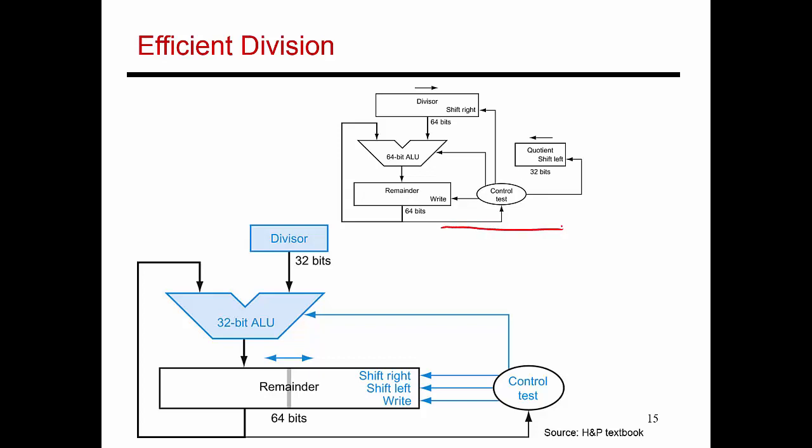So this is the hardware unit I showed you on the previous slide, where we had a 64-bit divisor, a 64-bit ALU, a 64-bit remainder register, and a quotient register over here. And just as before, I can make a lot of these units much more efficient.